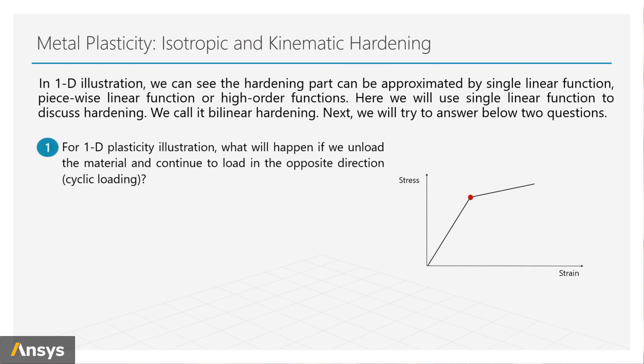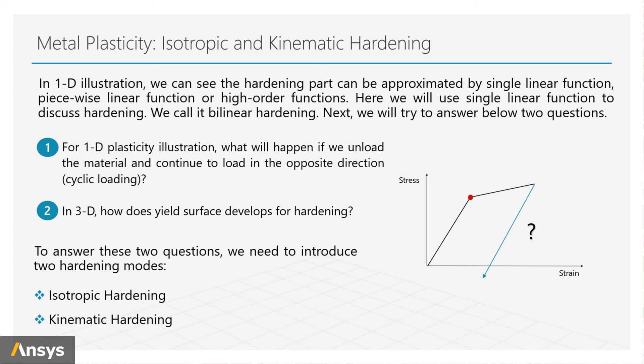Next we'll try to answer two questions. In 3D space, how does the yield surface develop for hardening? The other question is, for plasticity, what will happen if we unload the material and continue to load in the opposite direction? To answer these two questions we will introduce two hardening rules: isotropic hardening and kinematic hardening.